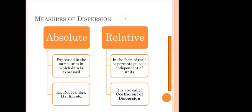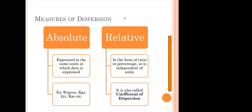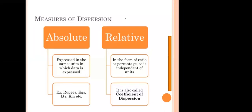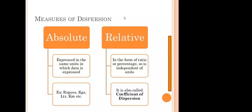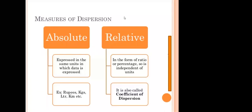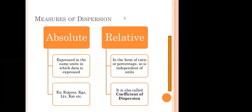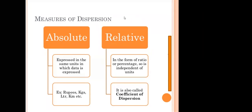Absolute measure of dispersion: if dispersion is expressed in the same unit in which the data series are expressed — such as rupees, kilograms, tons, years, and centimeters — it is called absolute measure. Relative measure of dispersion refers to variability stated in the form of ratios or percentages. It is independent of the unit of measurement and is also called the coefficient of dispersion. These measures are used to compare two series expressed in different units.